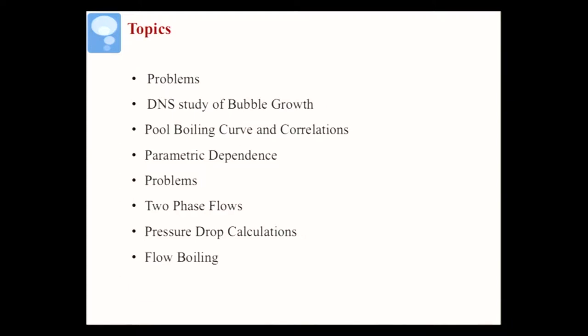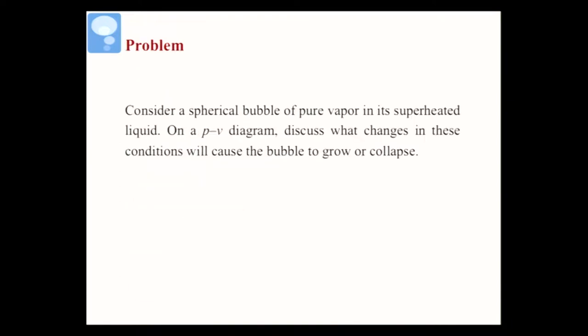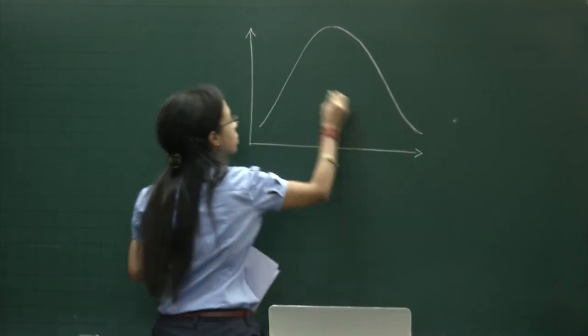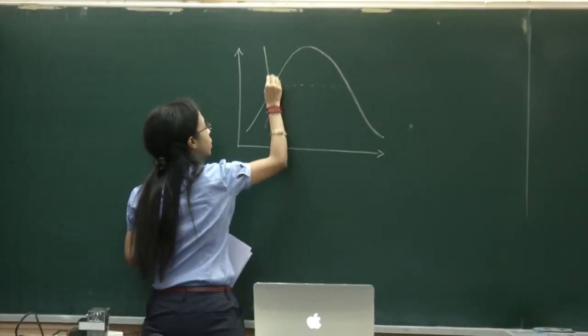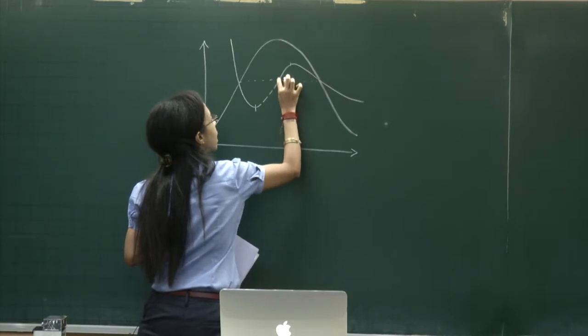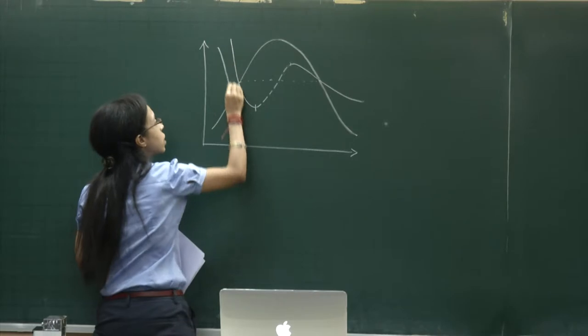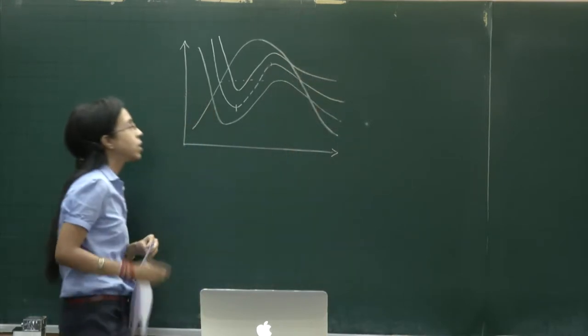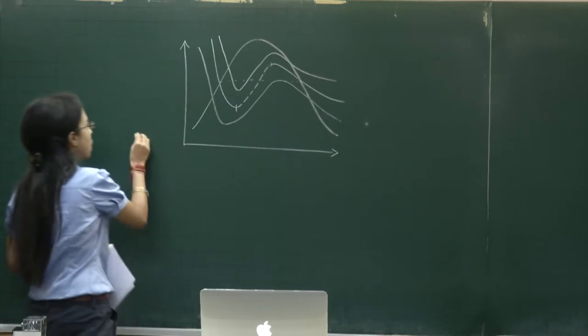Let's begin with problems from yesterday's study. Consider a spherical bubble of pure vapor suspended in a superheated liquid. On a PV diagram, can you tell me what kind of phenomenon can occur so that this bubble either grows or collapses? Looking at this from the PV diagram, you have the saturation curve and an isotherm follows this trend, where the region between two points is an unphysical form.